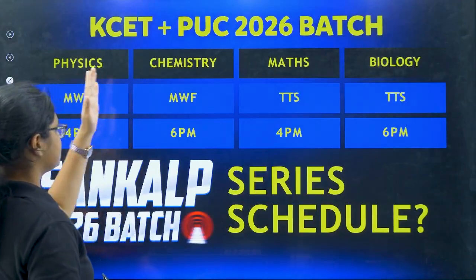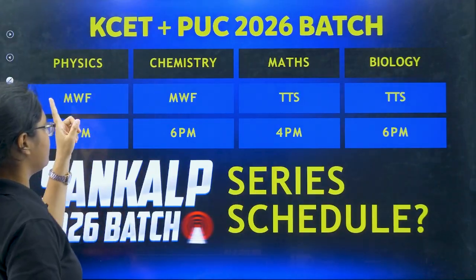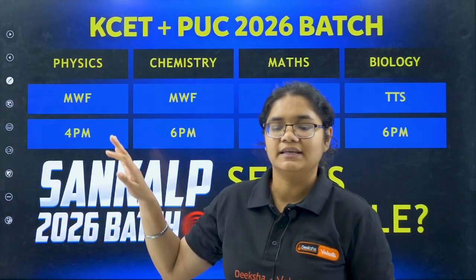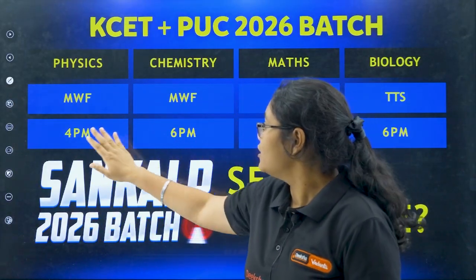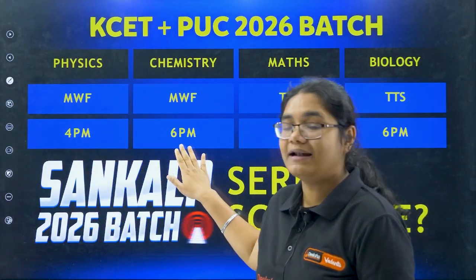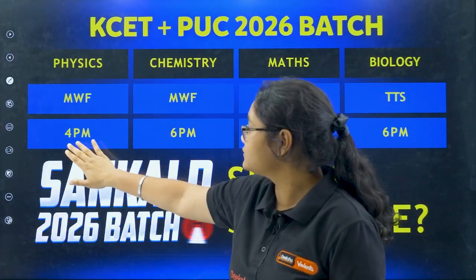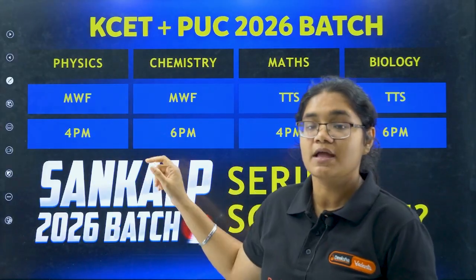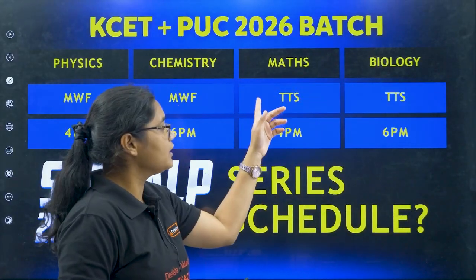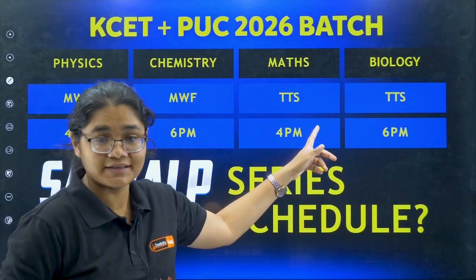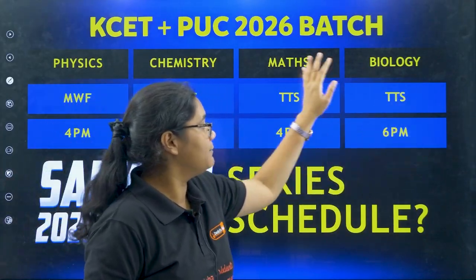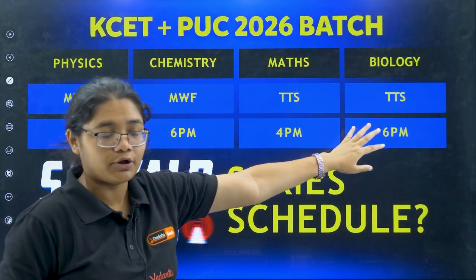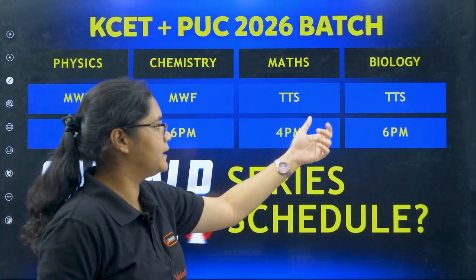Let me tell you what classes are scheduled. Physics and Chemistry are on Monday, Wednesday, and Friday — Physics at 4pm and Chemistry at 6pm. Then on Tuesday, Thursday, and Saturday, you have Maths and Biology — Maths at 4pm and Biology at 6pm.